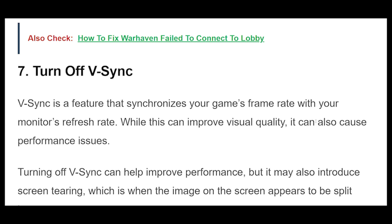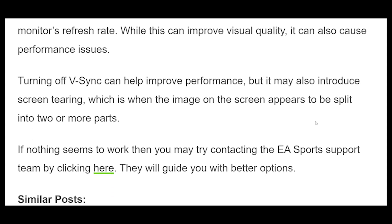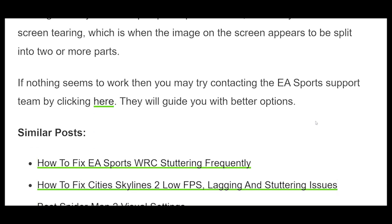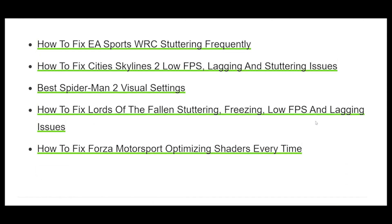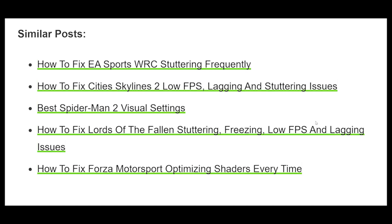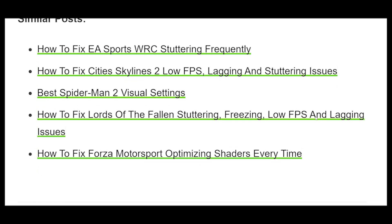Tip 7: V-Sync is a feature that synchronizes your game's frame rate with your monitor's refresh rate. While this can improve visual quality, it can also cause performance issues. Turning off V-Sync can help improve performance, but it may also introduce screen tearing, which is when the image on the screen appears to be split into two or more parts.